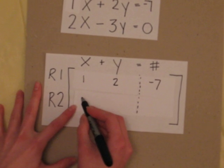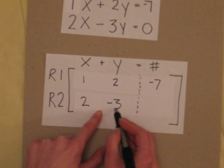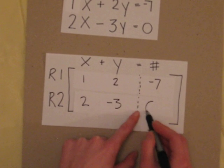For the second equation, under x, we put 2, y, negative 3, and the number is 0.